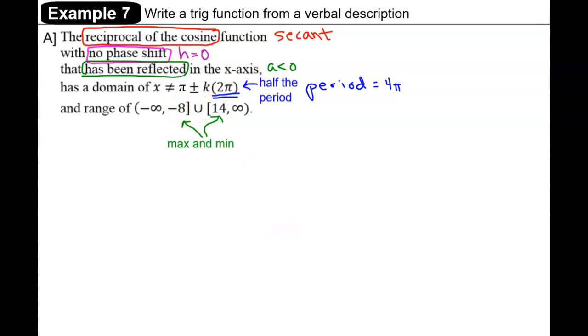14, and we can use those to find a. Since there's been a reflection in the x-axis, we find a = -|max - min|/2. So calculating, we get a = -11.